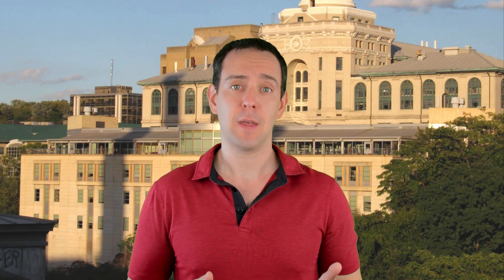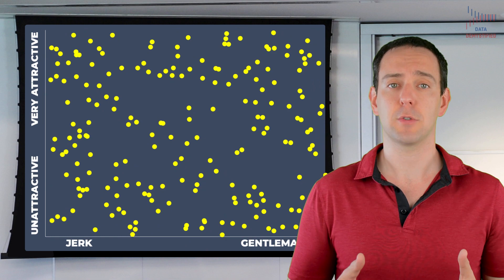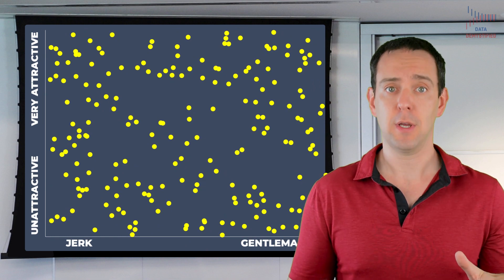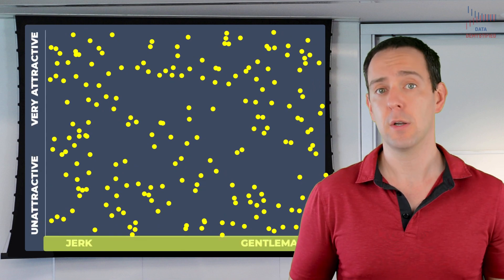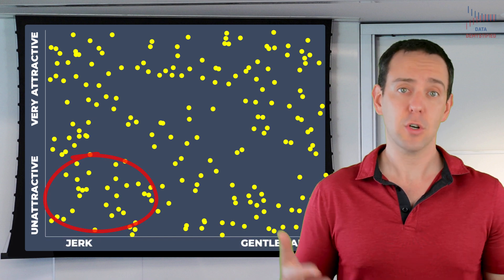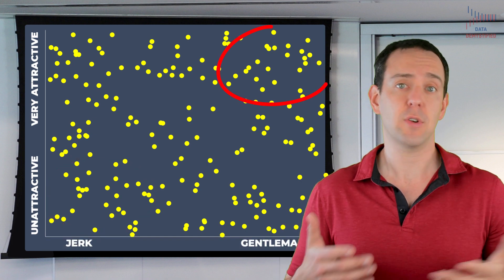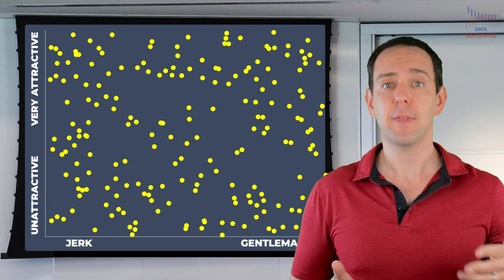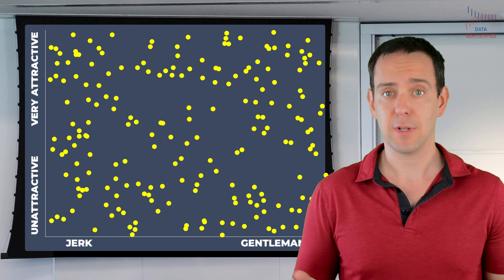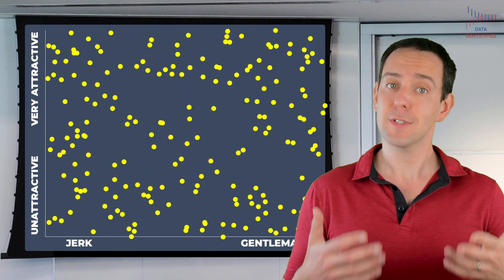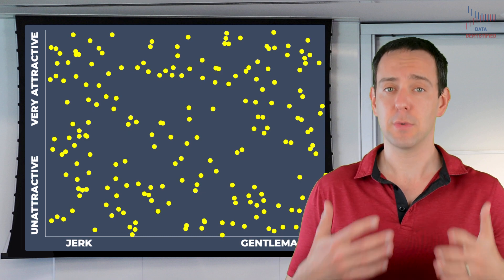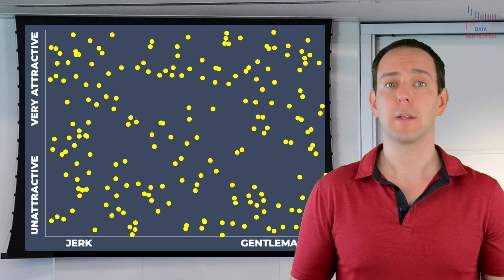So what does this have to do with attractiveness and personality of men? Let's start with a really simple assumption that there is no relationship between how attractive someone is and how personable they are. You can have unattractive jerks or very attractive gentlemen. If we plot that lack of relationship, it would look something like this. And it turns out, if you actually look at the data in the real world, this is pretty close to reality.